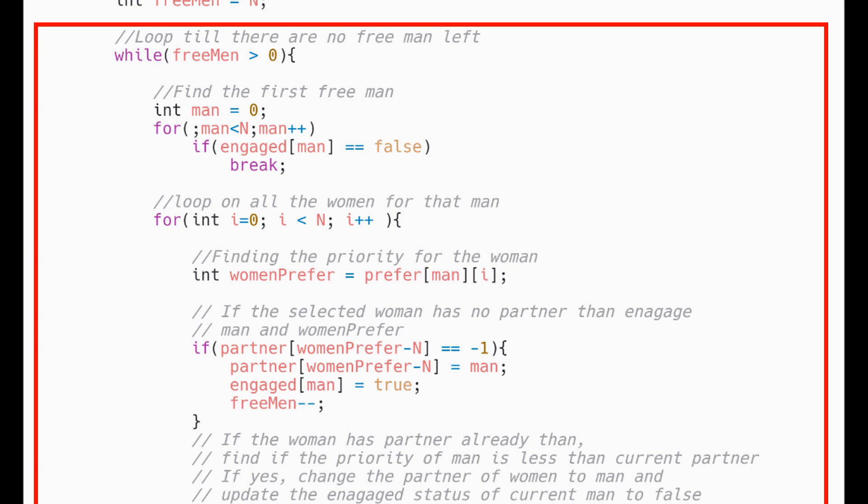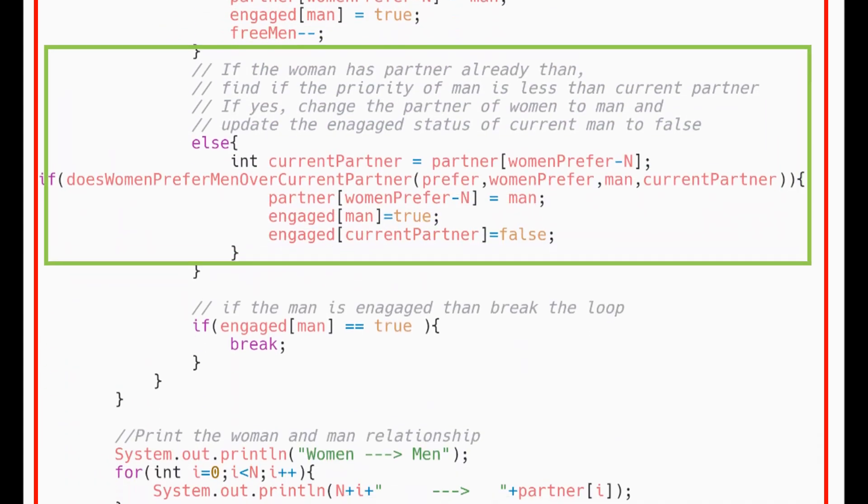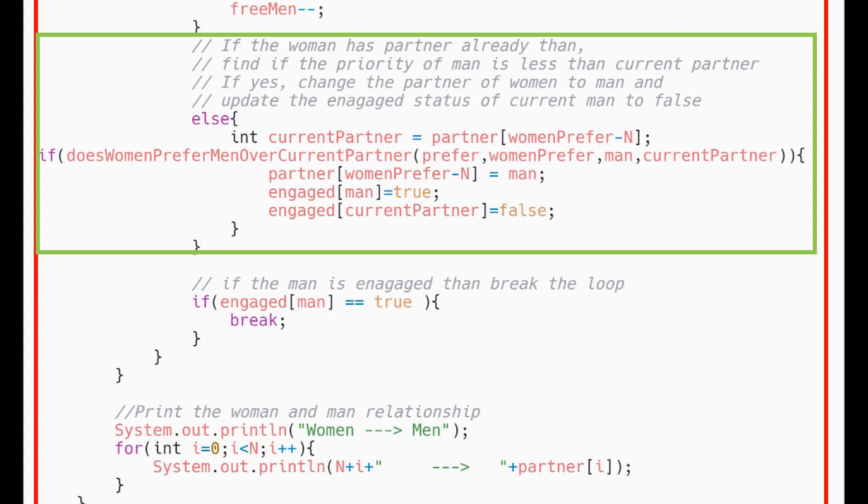Inside this loop, we find the first free man and loop for all the women. We check if the current woman is already engaged or not. If she does not have any partner, then we make the man her partner and update all the variables. Else, we find the current partner for the woman and find if the new man is more likable by the woman or the current man. If she likes the new man more, then we update the engagement to new man.